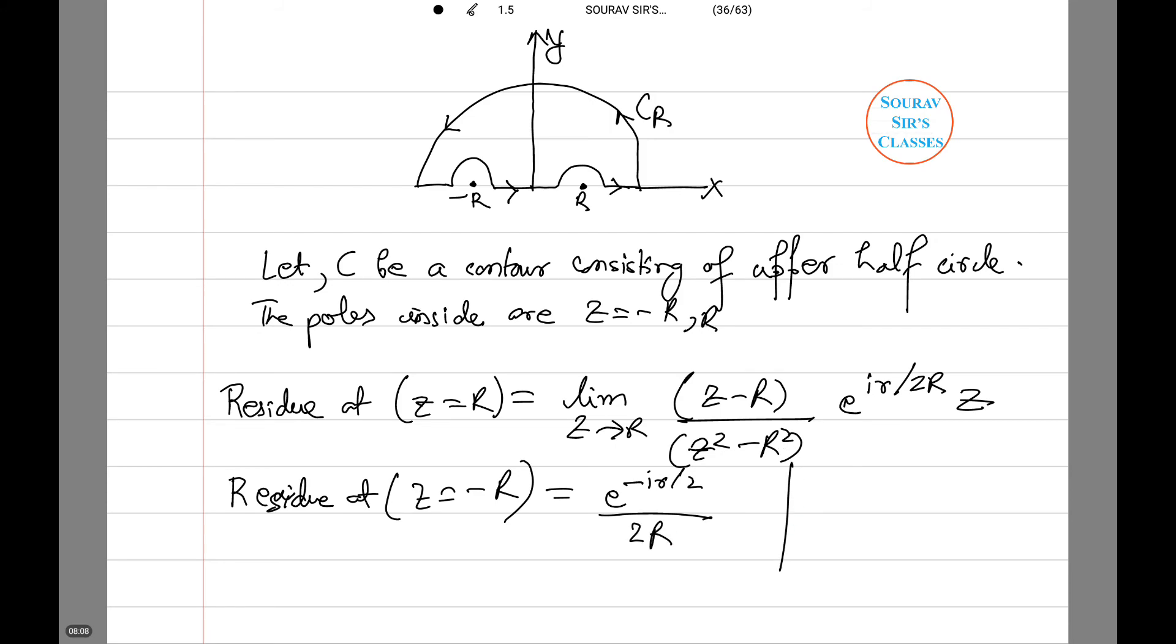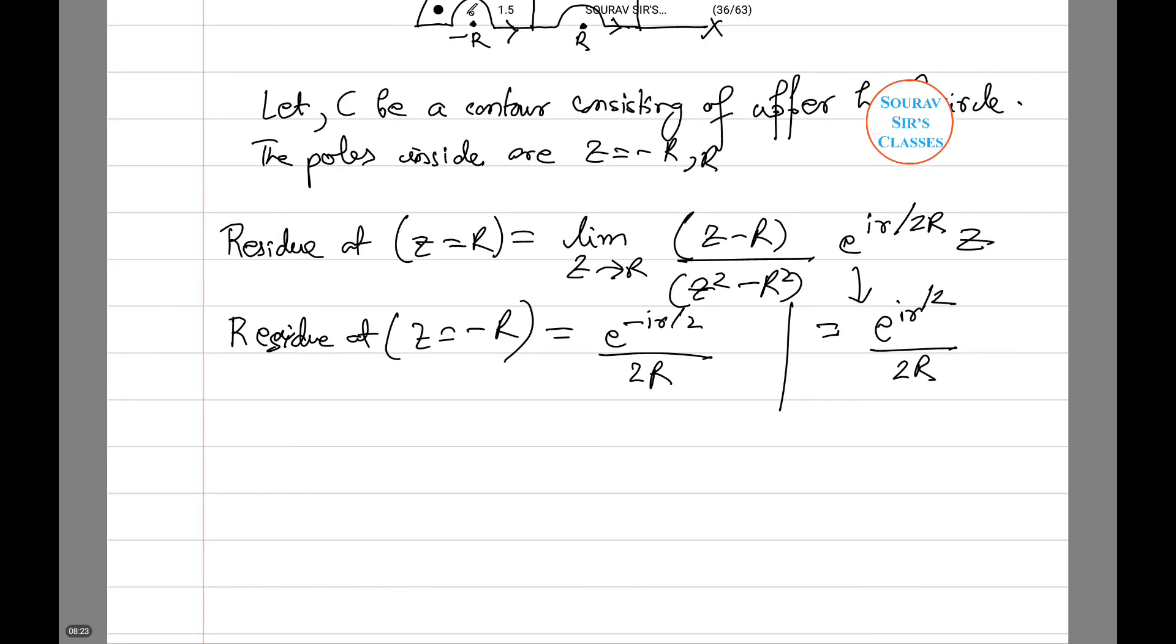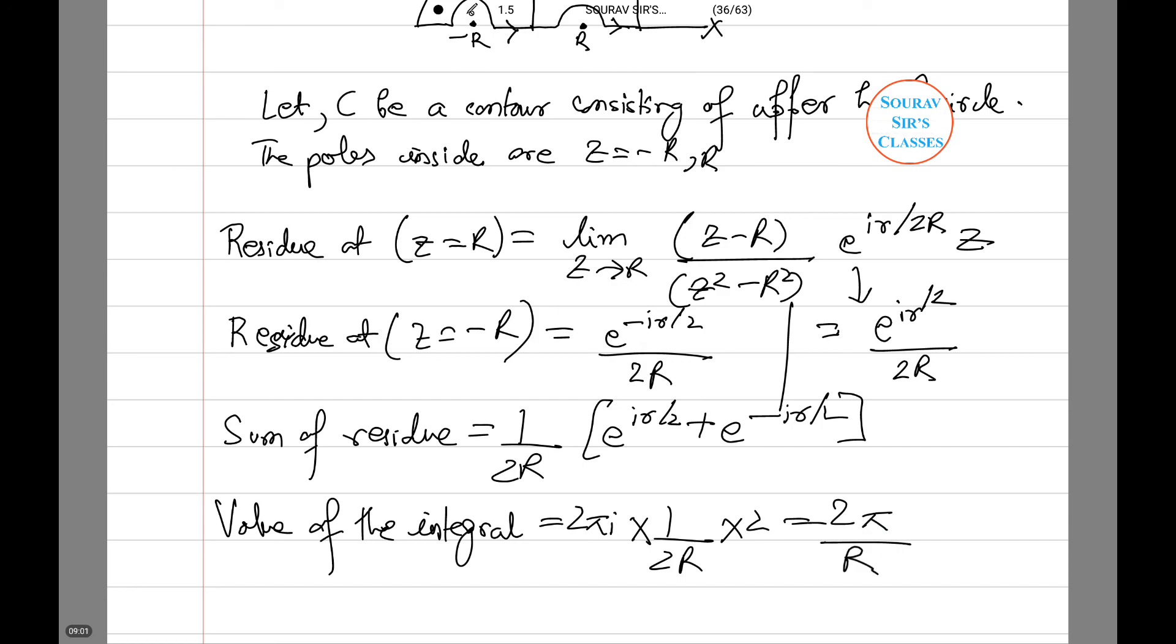Residue at z equals to minus R equals to e to power minus i2r by 2 whole divided by 2R. Sorry I missed a step. This equals to e to power i2r by 2 by 2R. Therefore the sum of residuals are 1 by 2R times e to power i2r by 2 plus e to power minus i2r by 2. Hence value of the integral is 2 pi i into 1 by 2R into 2, which equals 2 pi whole divided by R.